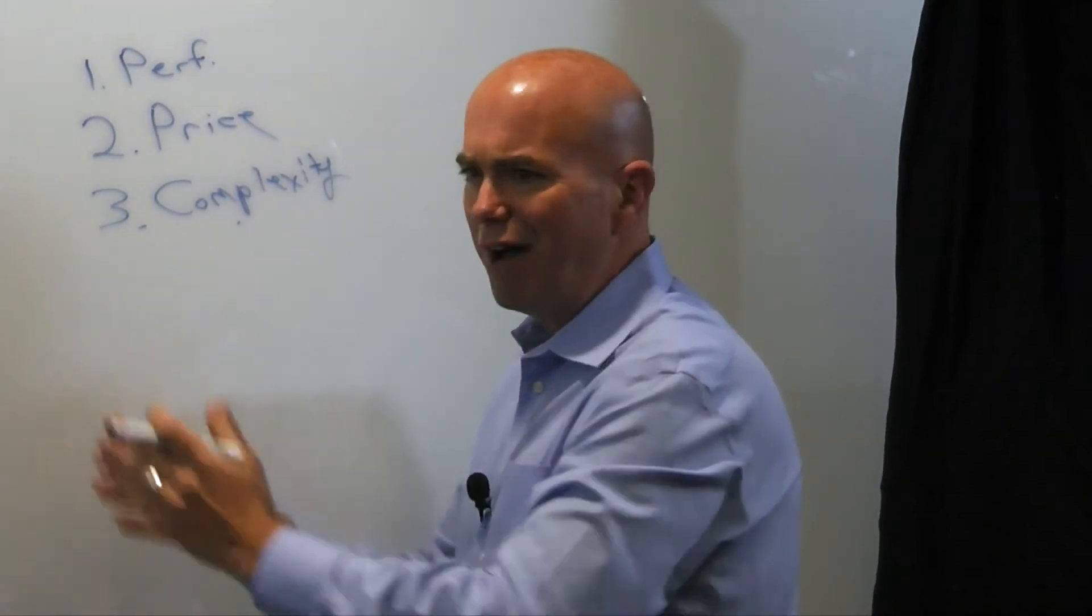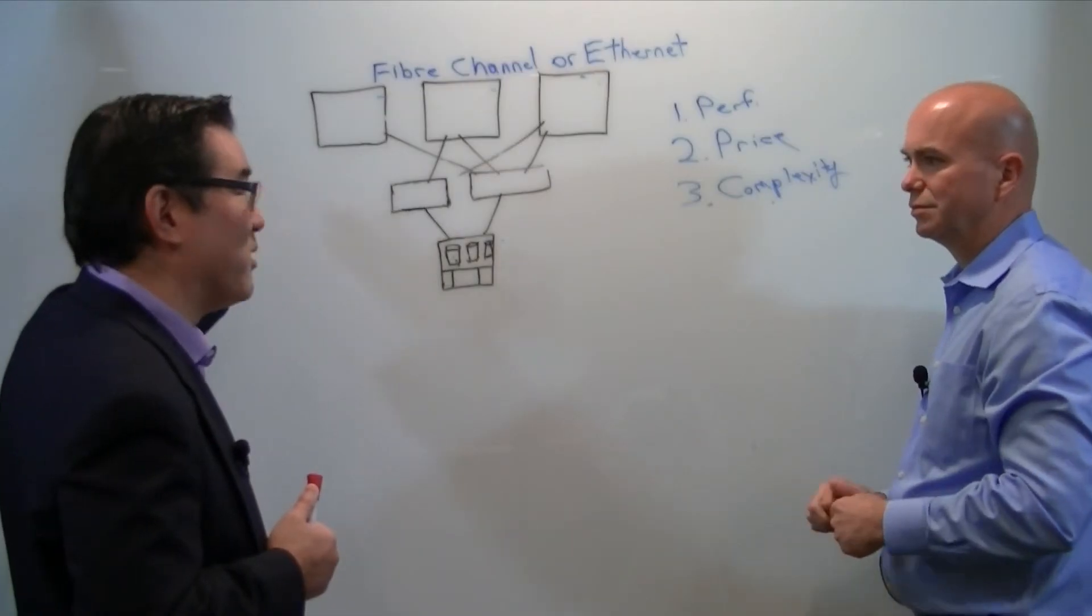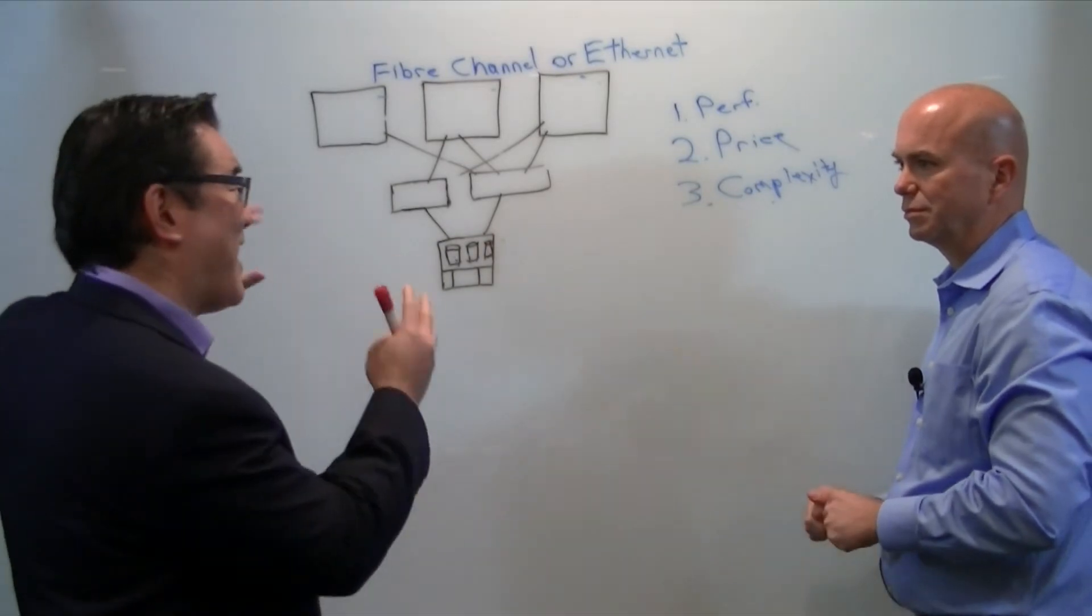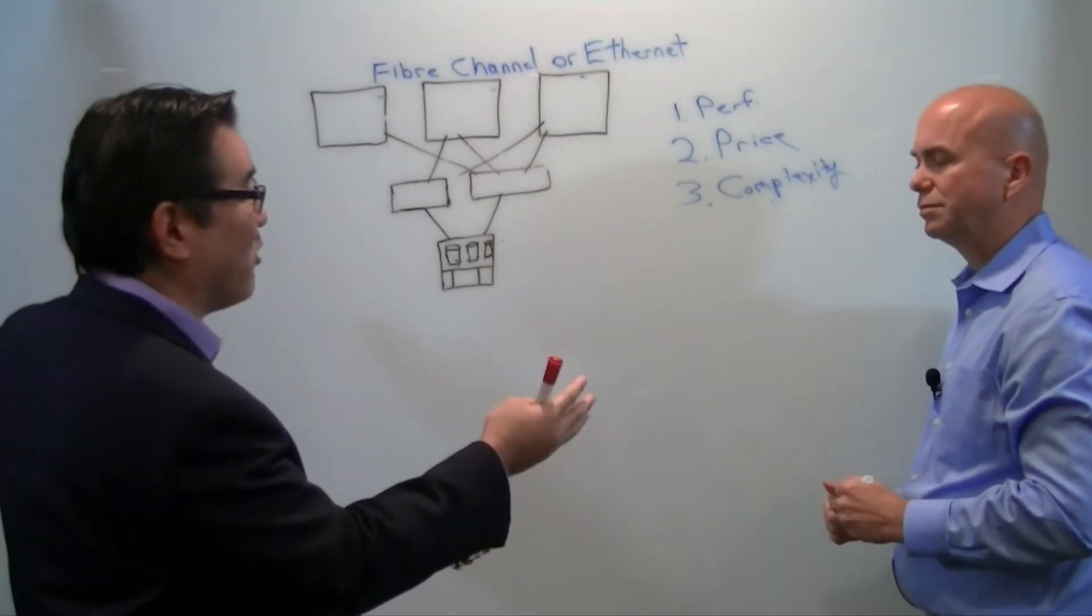Is Ethernet faster than fiber channel? Ethernet has speeds today: 1, 10, 40, 100. Fiber channel being deployed today, 16 gigs. So when you compare the fastest commonly deployed speed, you're really comparing 10 to 16. So is there an advantage there? No.